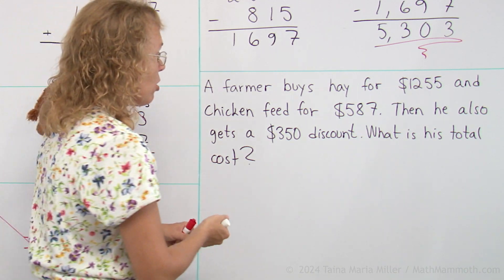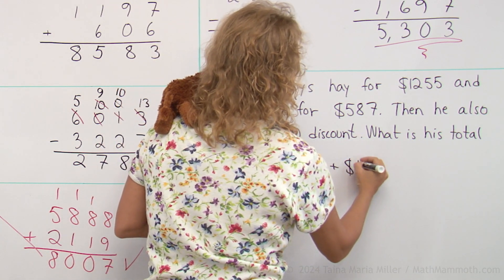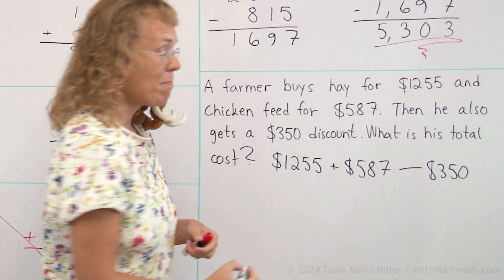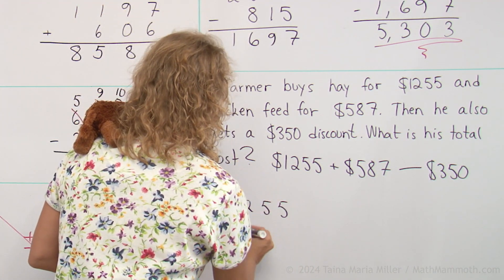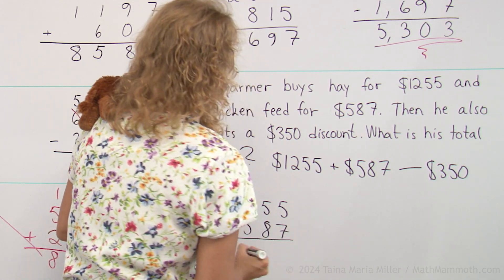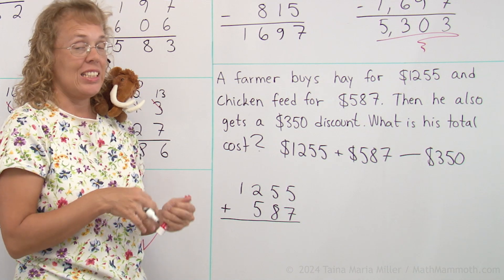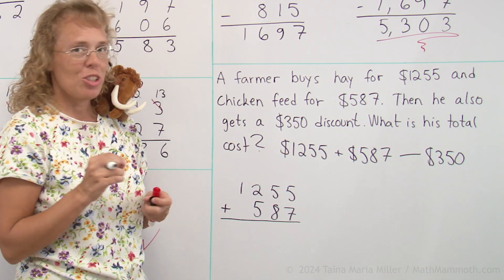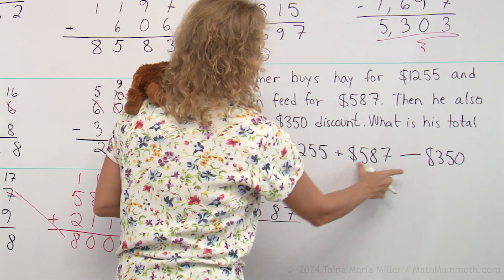So that means we need to add, and then we need to subtract. Take part of the price off. We need to add these two numbers, then subtract $350. Let's get to work. You need to be also careful that you are adding when you need to add and subtracting when you need to subtract. Many times children can make the simple mistake of subtracting and adding in the wrong places.